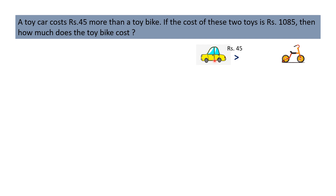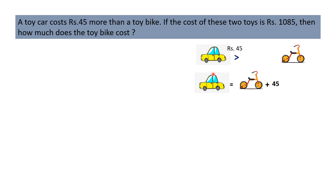Let's understand with an example. Suppose the cost of the toy bike is Rs.100. Then the cost of the toy car is Rs.45 more than Rs.100, which means cost of the toy car is equal to Rs.145. So if we add Rs.45 with the cost of the toy bike, we get the cost of the toy car. Let this be equation number 1.